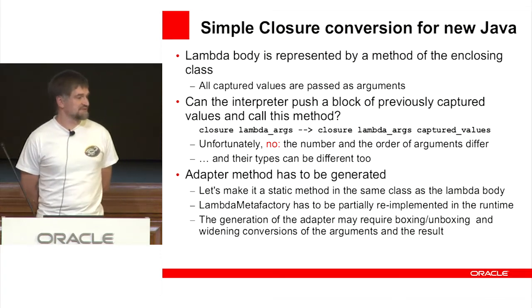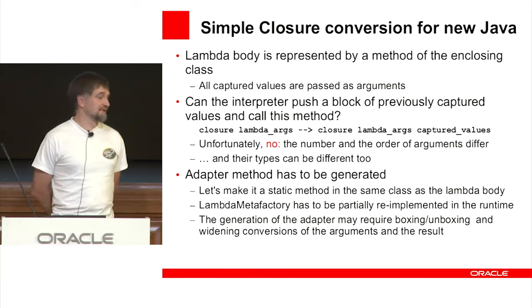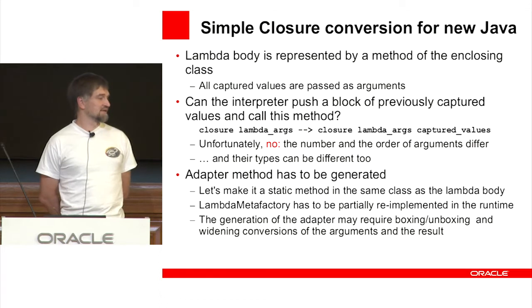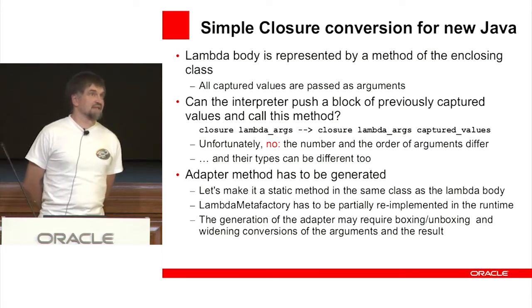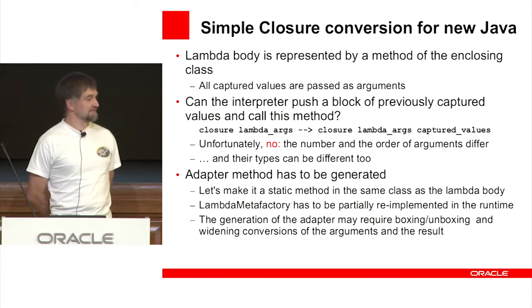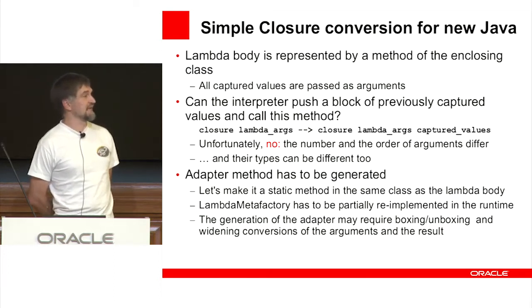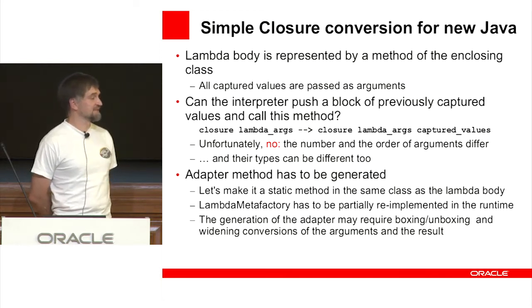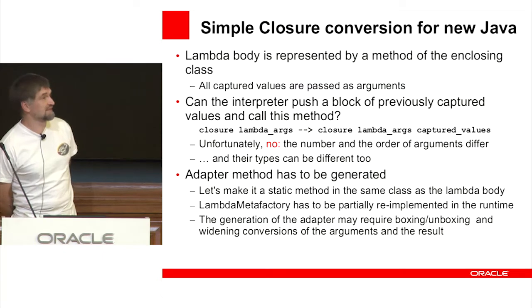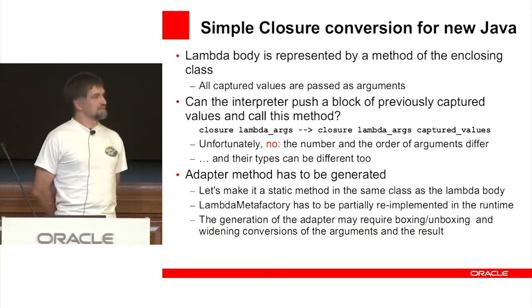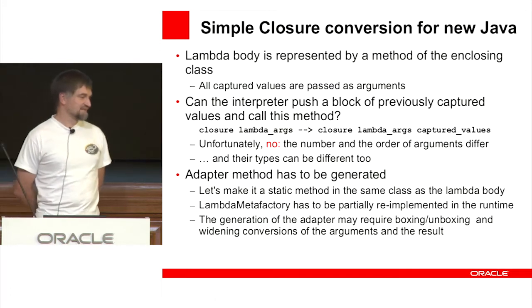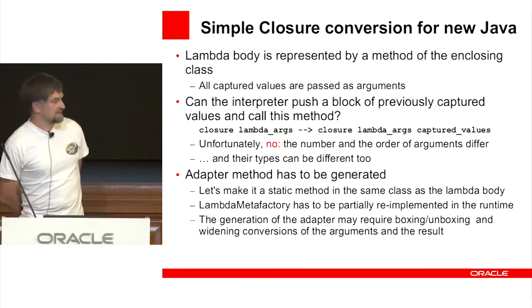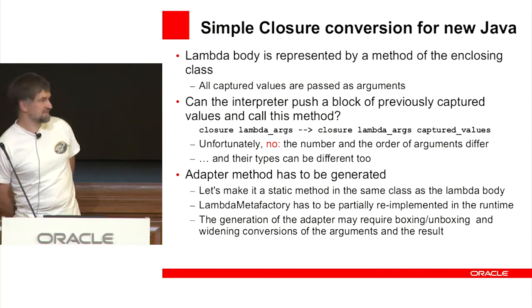A class can be converted to a simple closure when it's final, extends Object, implements a single functional interface, contains no fields or methods except for the implemented functional method and constructor, the constructor initializes every field by its respective argument, it contains only resolvable symbolic references, and it's referenced only at the capture site. Unfortunately, anonymous classes compiled to class files become package-private — the enclosing scope of the inner class definition is lost — so you can't reliably prove these conditions; you can only provide heuristics.